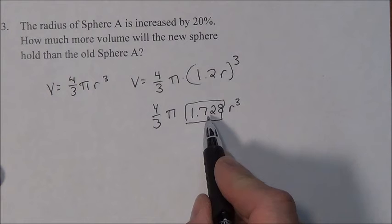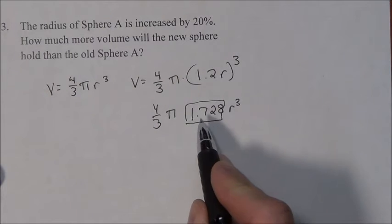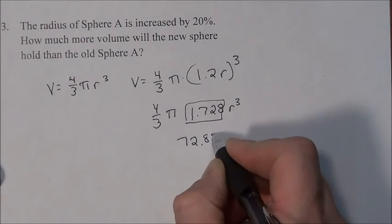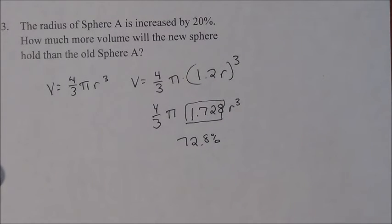Now how much larger is this? That's all of it, 100%, and then this extra is 72.8, so it's 72.8% more. How much more volume do we have? We're going to get 72.8% more volume by increasing our radius by 20%.